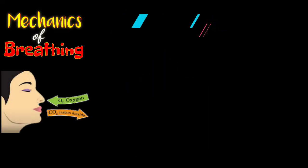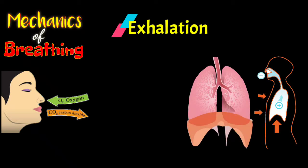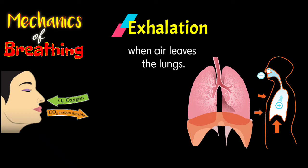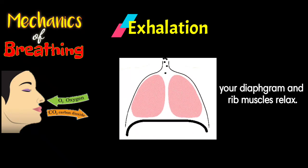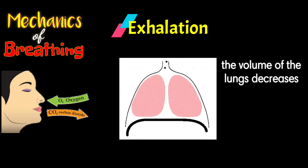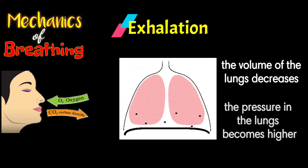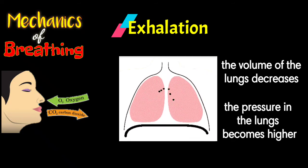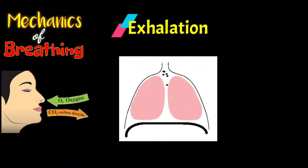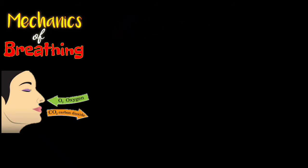The next process is exhalation. Exhalation is the mechanical process that occurs when air leaves the lungs. This process, shown in our illustration, depends on the elasticity of the lungs. The lungs recoil as the inspiratory muscles relax. During this process, the volume of the lungs decreases. The pressure inside the lungs becomes higher than the atmospheric pressure as the gases inside the lungs move closely together. This causes air to leave the lungs to make the pressure inside and outside of the lungs equal.